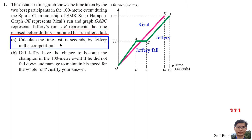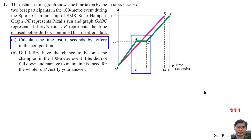Calculate the time lost in seconds by Jeffrey in the competition. The time lost is 9 minus 6, which equals 3 seconds.